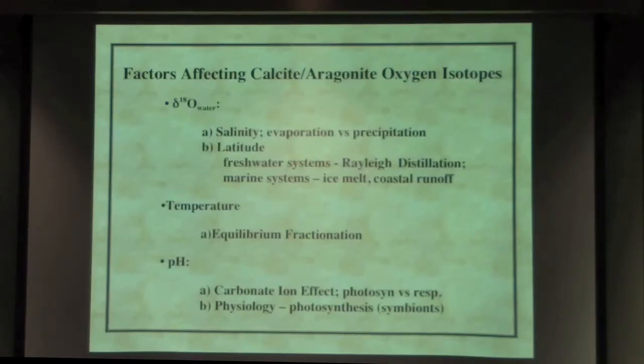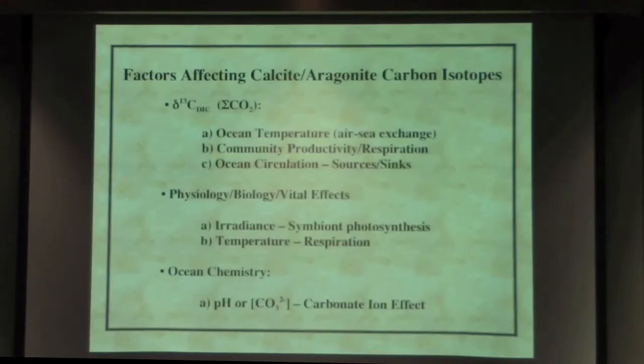We already knew that the delta-O18 of the calcite's affected by delta-O18 seawater. It's affected by the regional hydrology, evap versus precipitation. It's affected by river runoff, freshwater runoff, and it's also affected in regions where you have ice melt and coastal runoff. The shells are affected by temperature. And as I'll get to a little bit later, we discovered also there was a pH effect on the geochemistry of the shells.